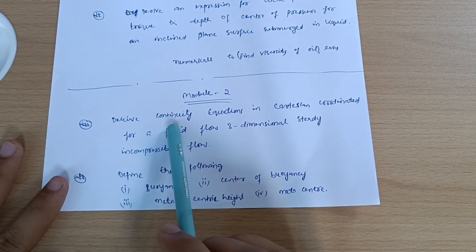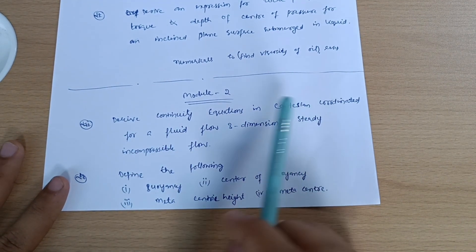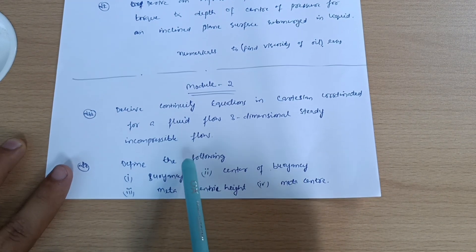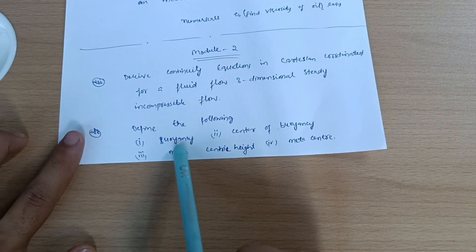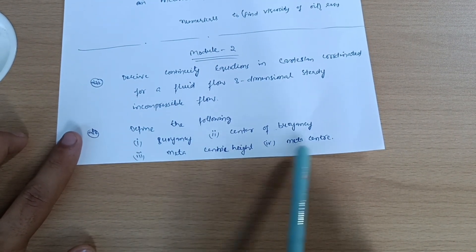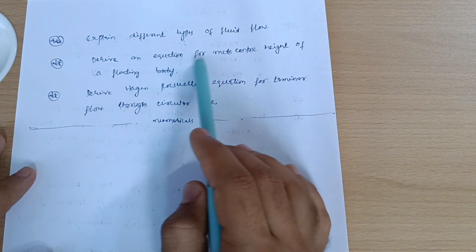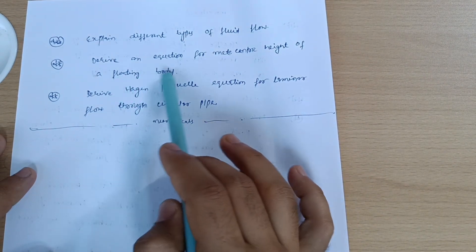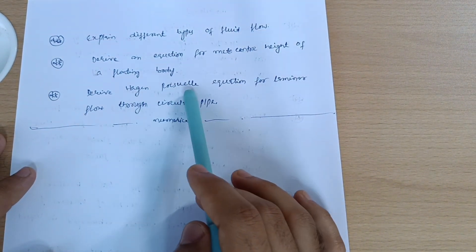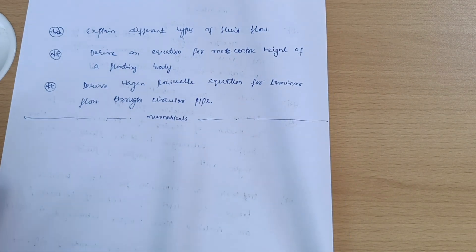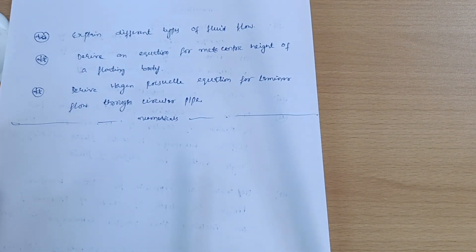Now let's discuss Module 2. Derive continuity equation in Cartesian coordinates for a liquid flow, three-dimensional steady incompressible flow. Define the following: buoyancy, center of buoyancy, metacentric height, metacenter. Explain different types of fluid flow. Derive an equation for metacentric height of a floating body and derive Hagen-Poiseuille equation for laminar flow through circular pipe. This is all about Module 2.